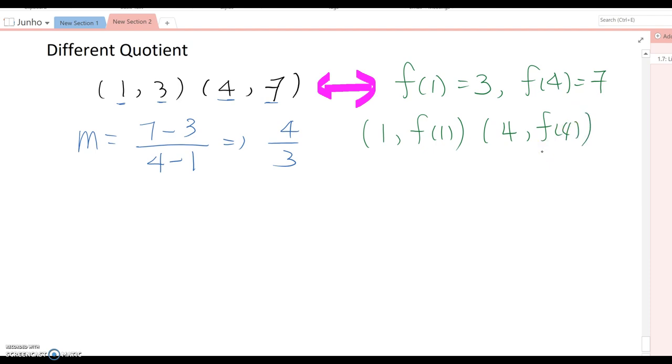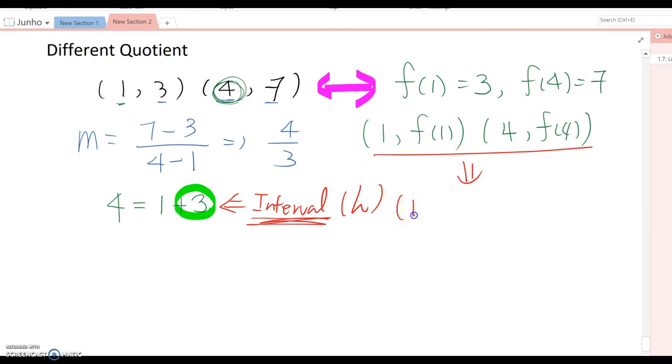So 4 is how much more than 1? Yes, 4 means from the initial value x1 we add 3 more, so this 3 is the interval from the initial value which is 1. From now on I'm going to indicate the interval expressed as h here. Then this point now we can rewrite again: (1, f(1)) and now this becomes (1 plus 3, f(1 plus 3)).